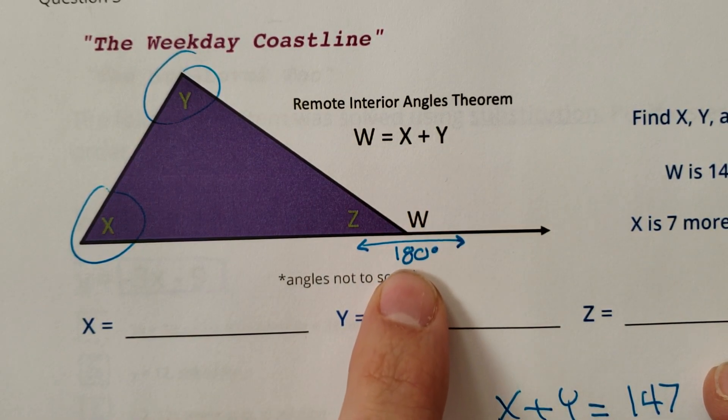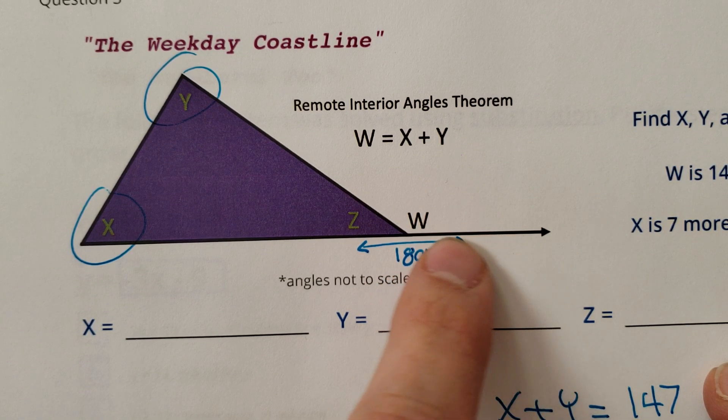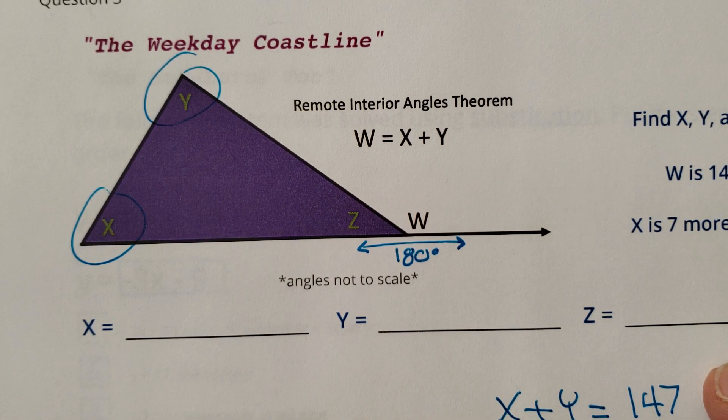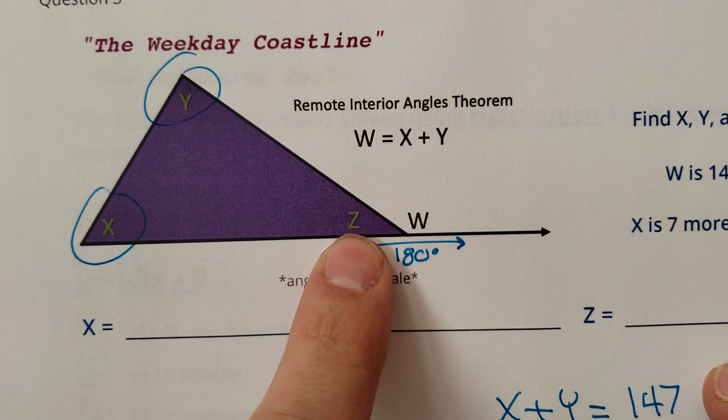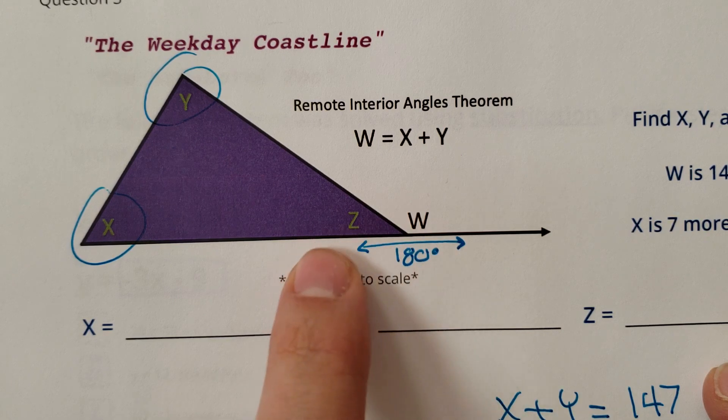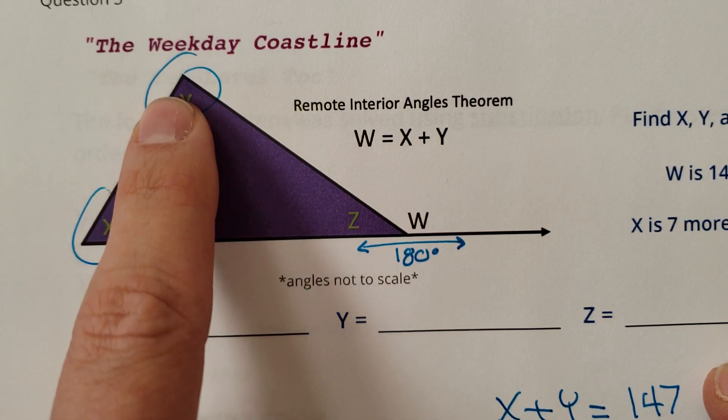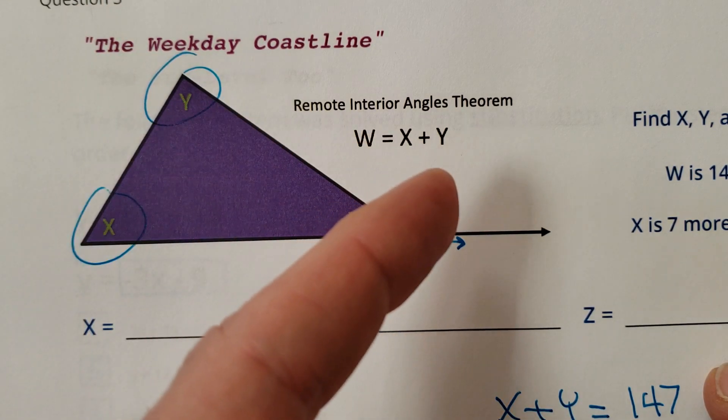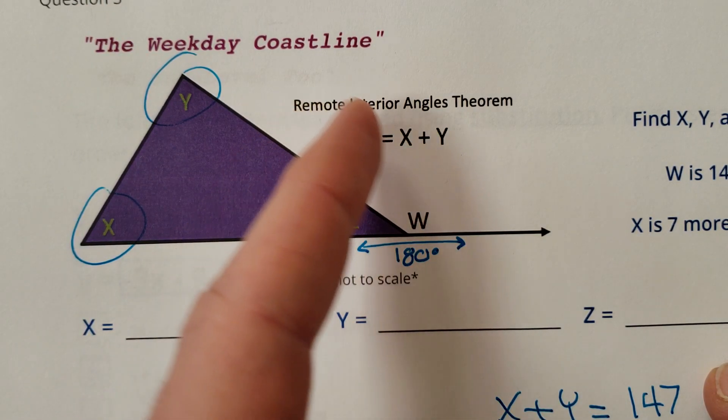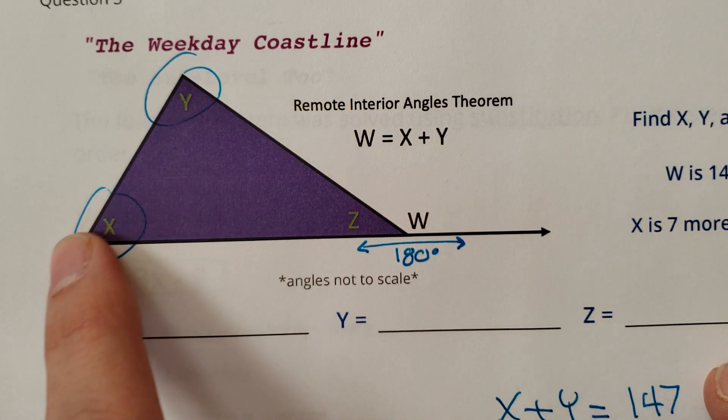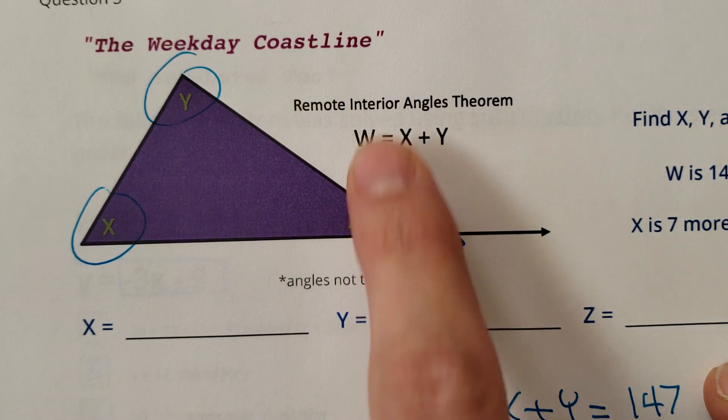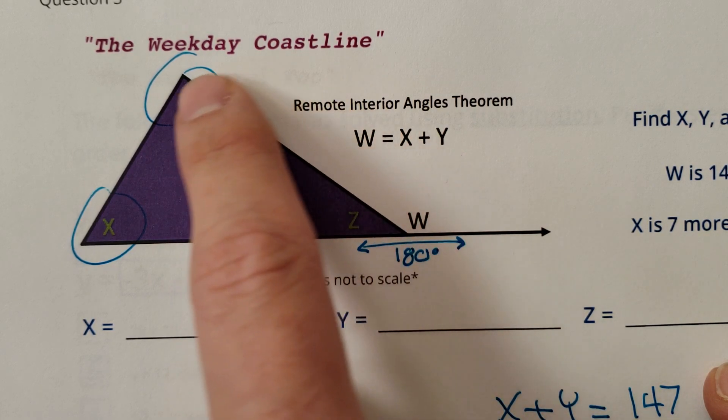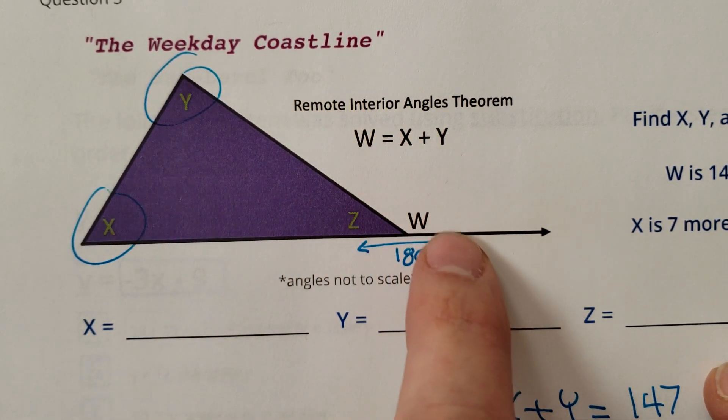It has to do with 180 degrees and the fact that a straight line makes 180 and a triangle makes 180. So Z with W makes a straight line, and Z with X and Y also makes 180. Therefore, these two pieces will always equal W. They're called remote, think about remote going across the room when you're pointing a remote at a TV, the remote across the triangle interior angles. These two angles add to this outside angle.